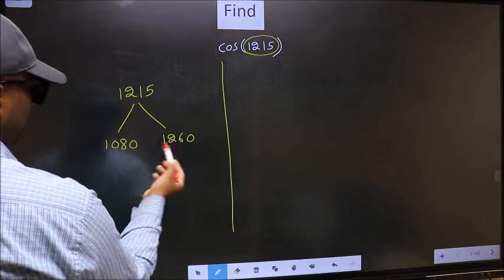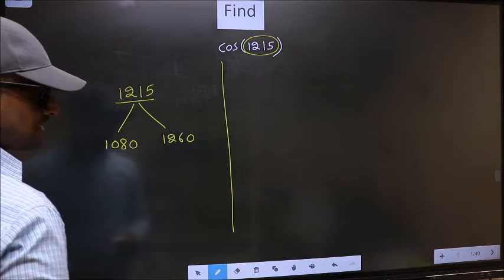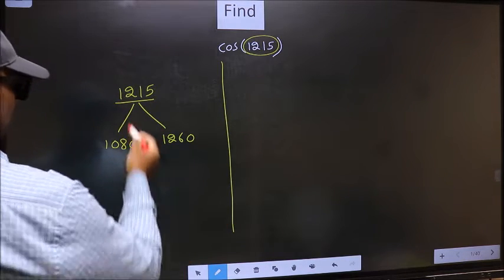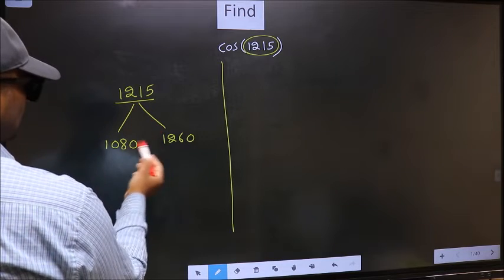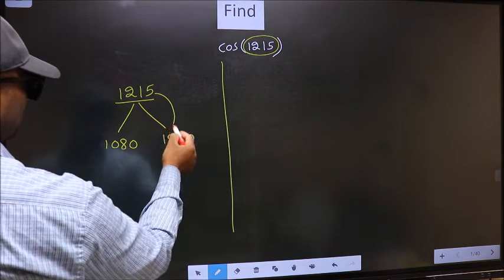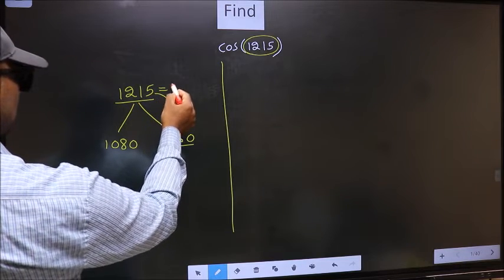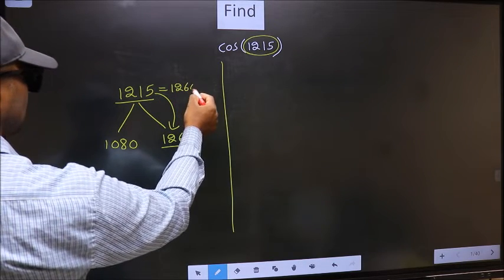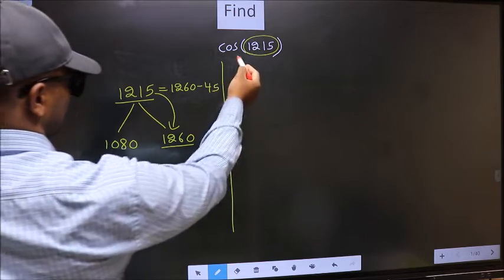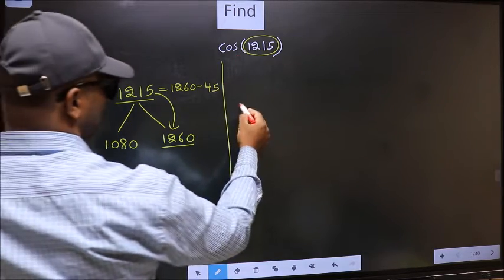Next, 1215 is close to which number? This is close to 1260. So in place of this, now we should write 1260 minus 45. So this will become cos 1260 minus 45.